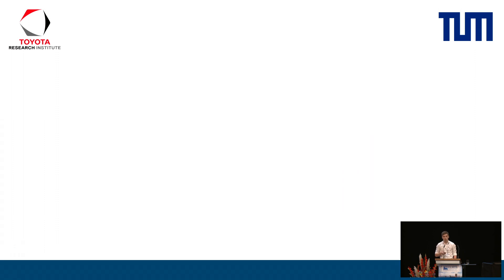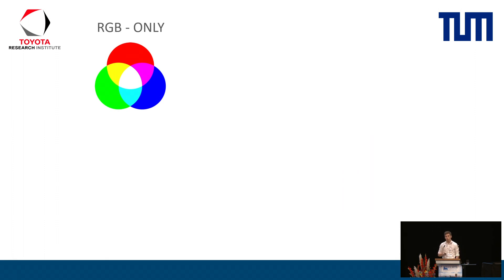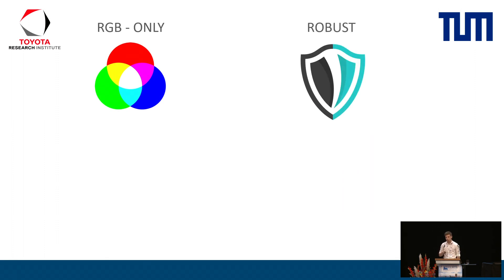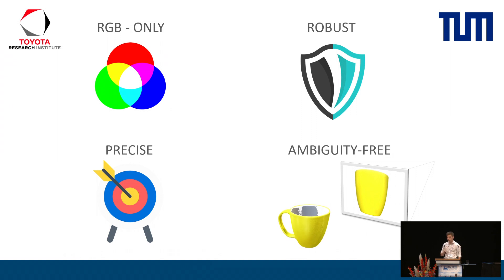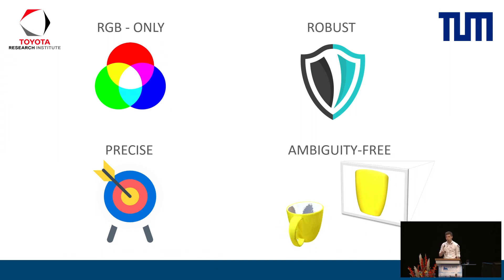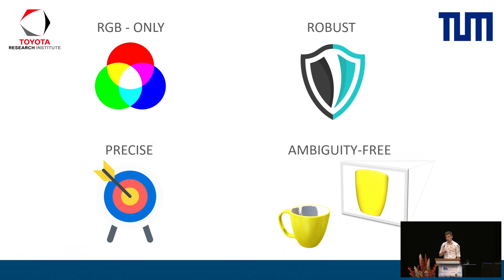Let's quickly discuss the goals of this work. Essentially, we want to do 6D pose refinement in RGB only, which is robust to occlusion, bad initialization, and clutter. Additionally, we want to be very precise but also ambiguity-free. In particular, pose estimation from RGB data only can be an ill-posed problem. As we can see, referring to the yellow cup, different views can lead to the same visual outcome due to symmetries or occlusion. To this end, we propose a new visual proxy loss which implicitly deals with this problem.